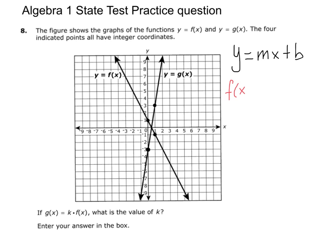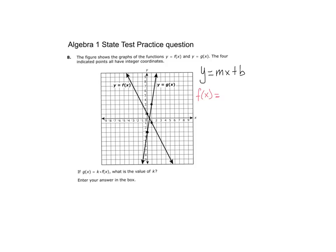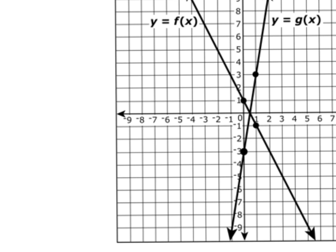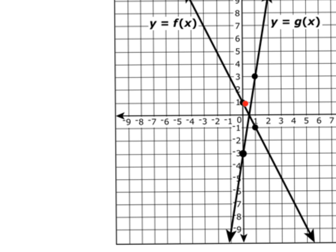f of x equals, and remember, slope is the number next to x. So let's figure out what the slope of f of x is. Here's a point right here, and here's a point, and these are both on f of x. So let's write what those two points are. This point right here is the point (0, 1). So I'm going to write (0, 1), and this point right here is the point (1, -1).